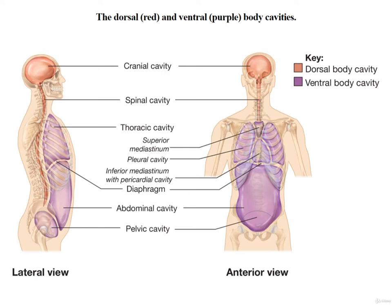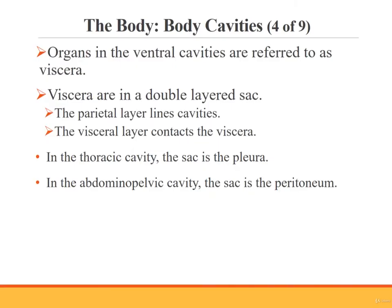This figure illustrates dorsal and ventral views of the body cavities. The organs in the ventral cavities are referred to as the internal organs or viscera. The viscera are encased in a double-layered membranous sac. The outer layer is the parietal layer, and the inner layer is the visceral layer, which contacts the viscera. Within the thoracic cavity, the membranous sac is called the pleura. Within the abdominopelvic cavity, the sac is called the peritoneum.